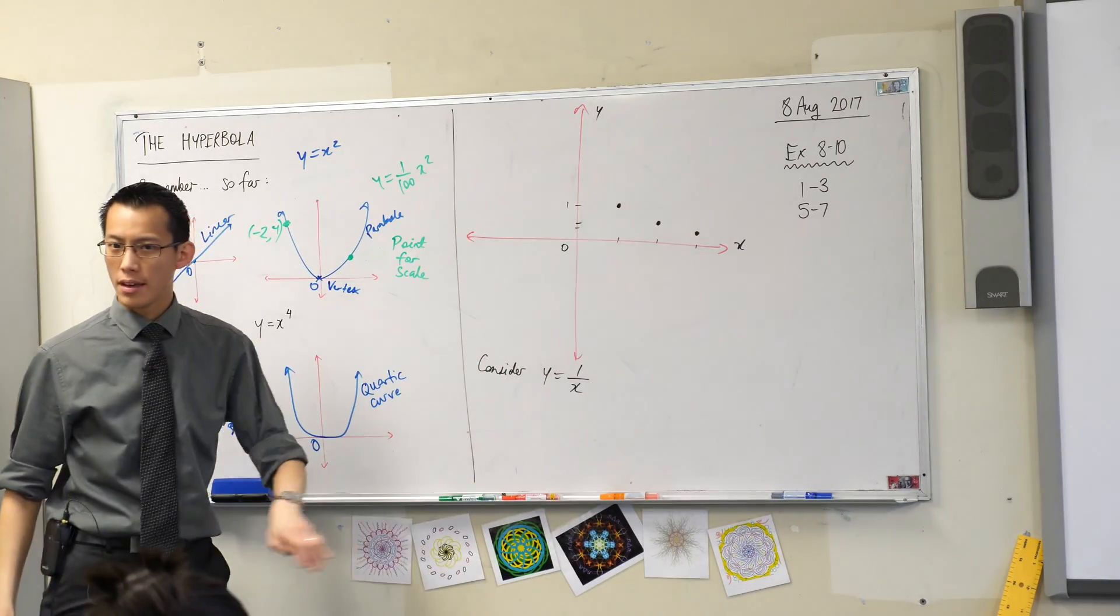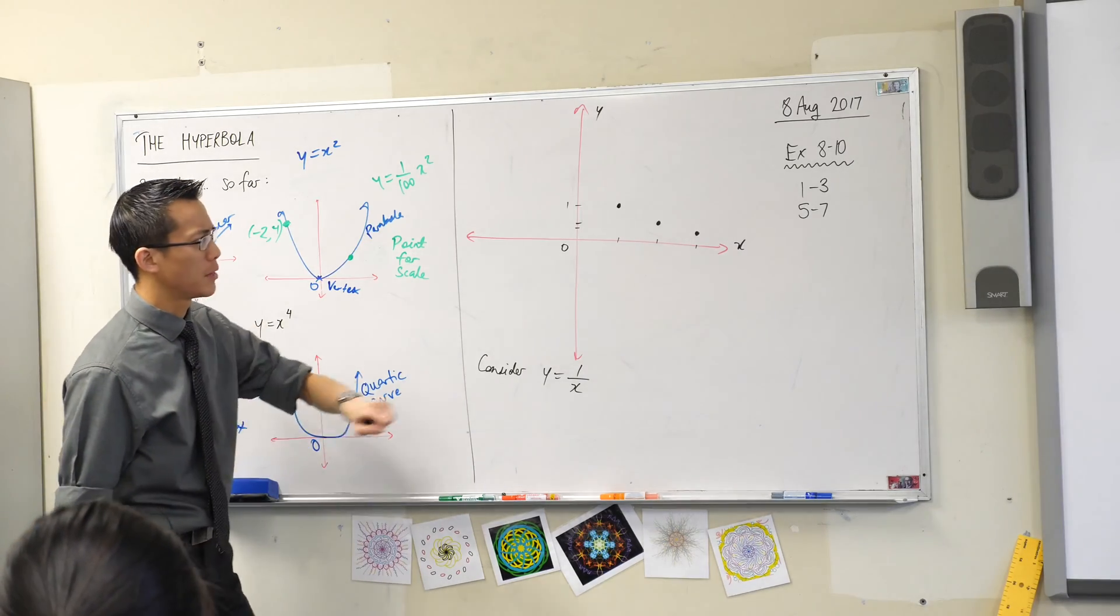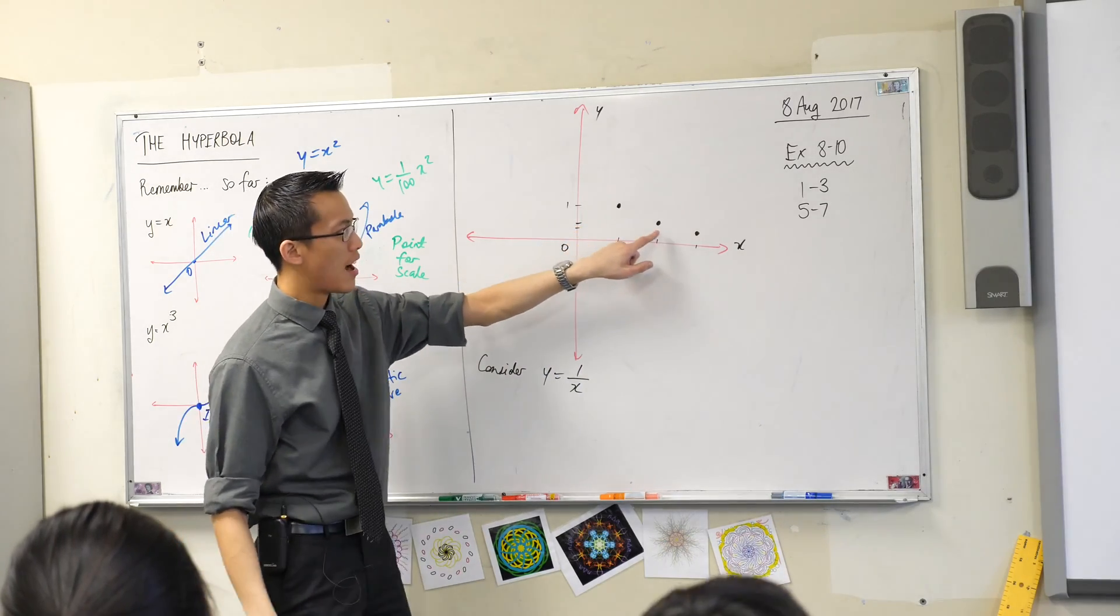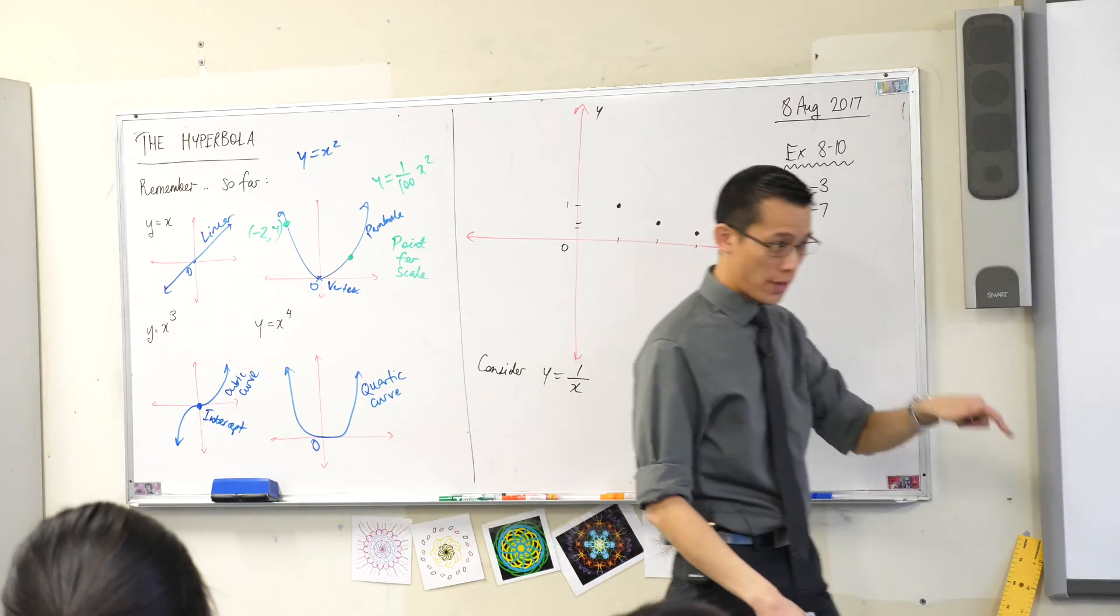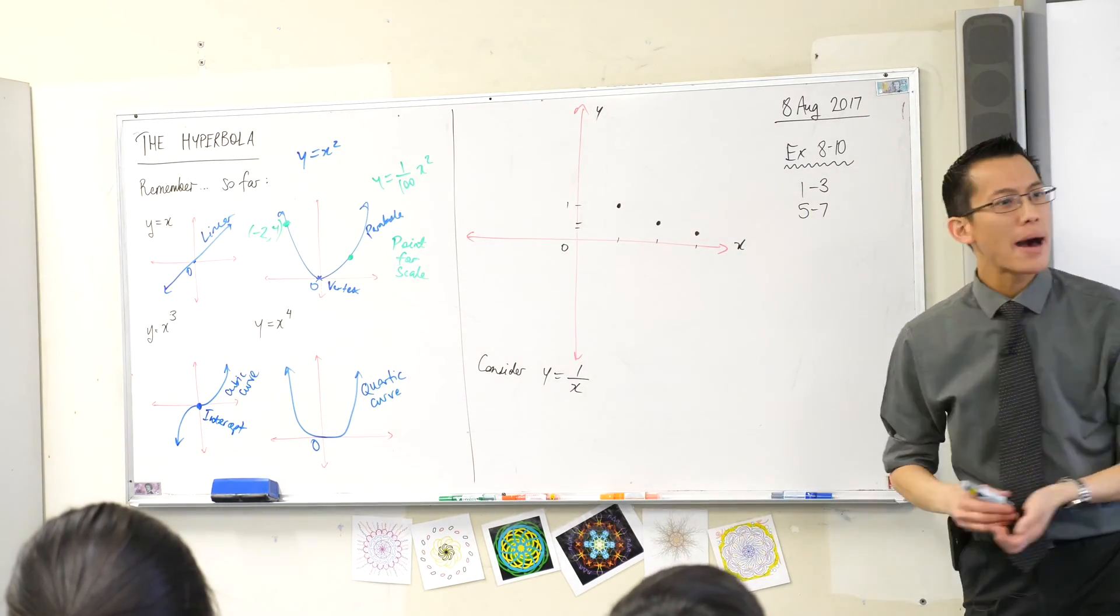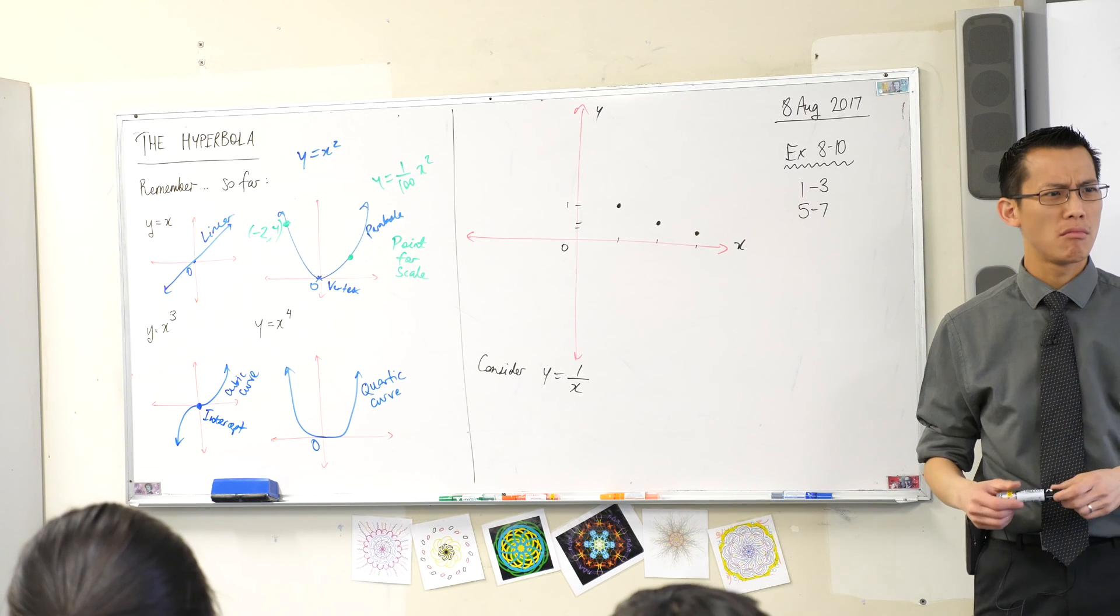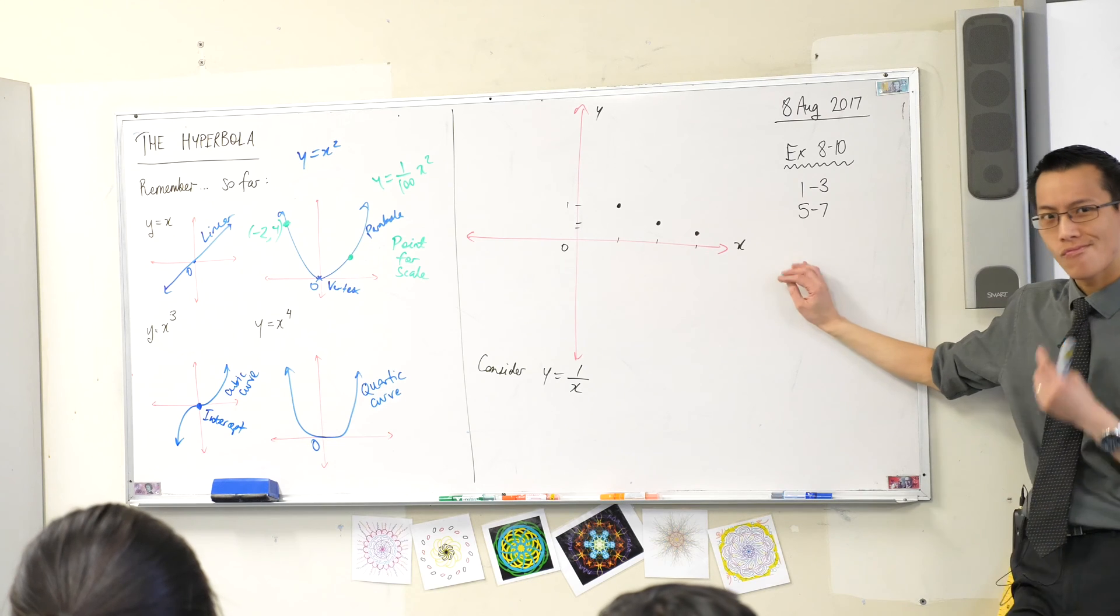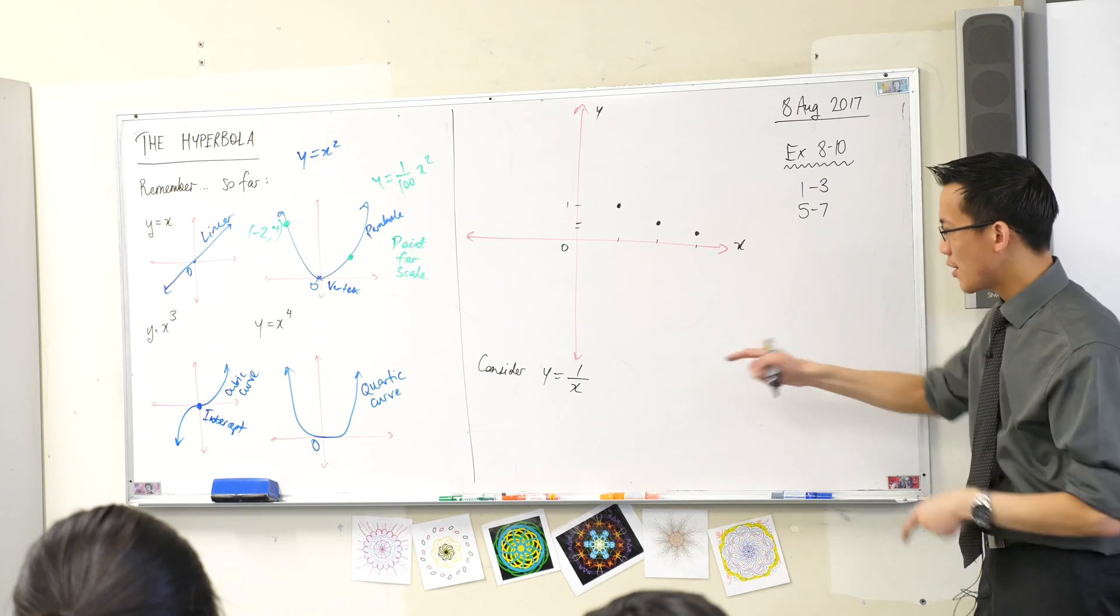Okay, now this is interesting. You can see if I keep going, I'm going to get 1, a half, a third, the next one would be a quarter, a fifth, a sixth, etc. Am I ever going to get to zero? Why not?